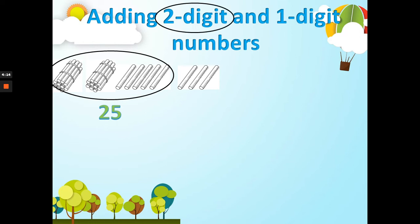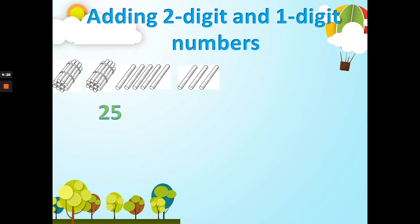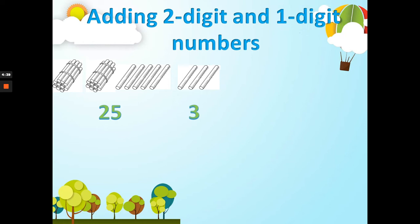That means we have two and five — two digits, understand? Now let's look at this one: how many sticks? We have only three, and three is just a one-digit number — only one number, three.